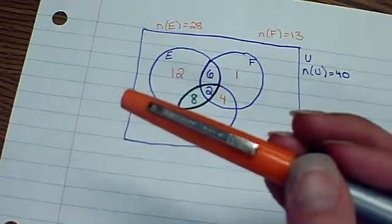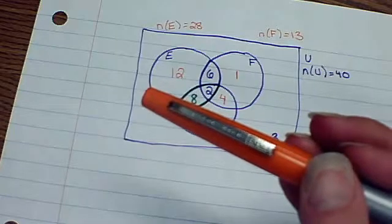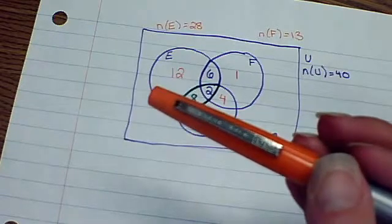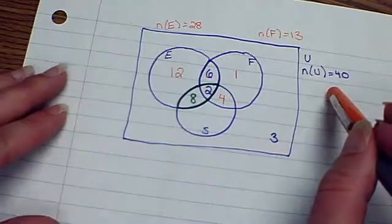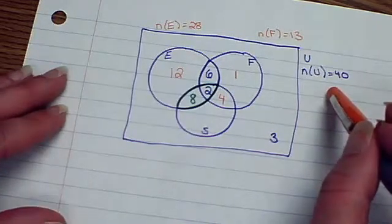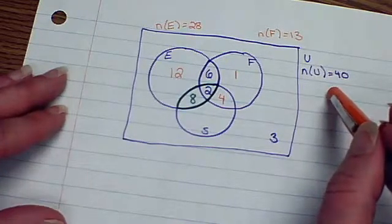Now, we finished filling this out, but there's a next step to this. There's forty total. Do we have them all accounted for? Let's find out.